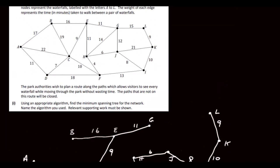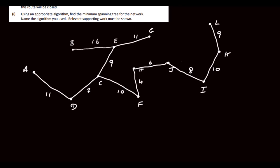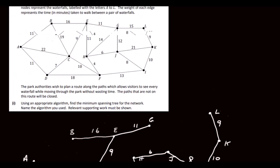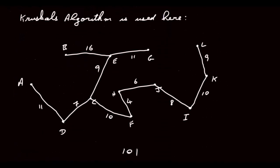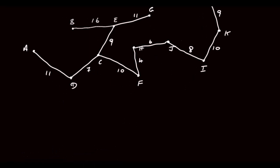We have 12 nodes, so we should have 11 edges — and counting: 1, 2, 3, 4, 5, 6, 7, 8, 9, 10, 11. Yes, that's correct. It's exactly the same result as Kruskal's algorithm. If you add all those weights up you get 101 as well.